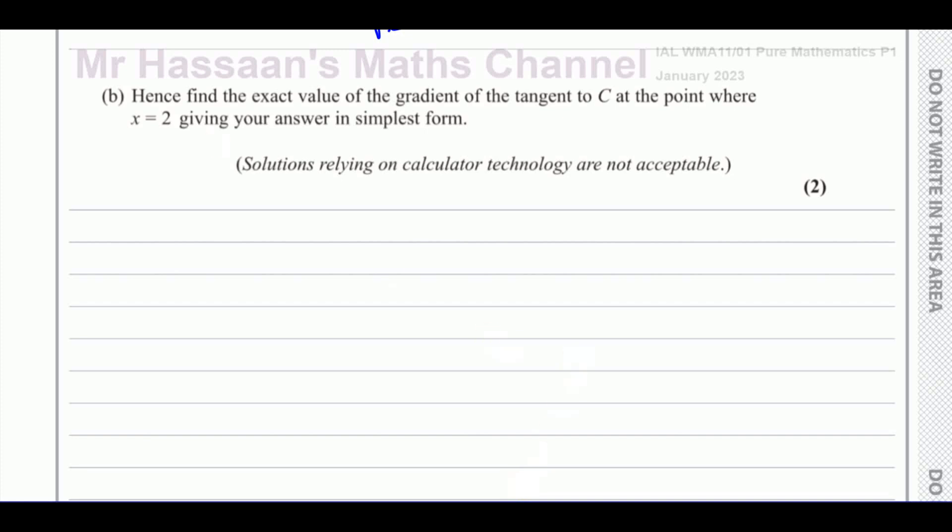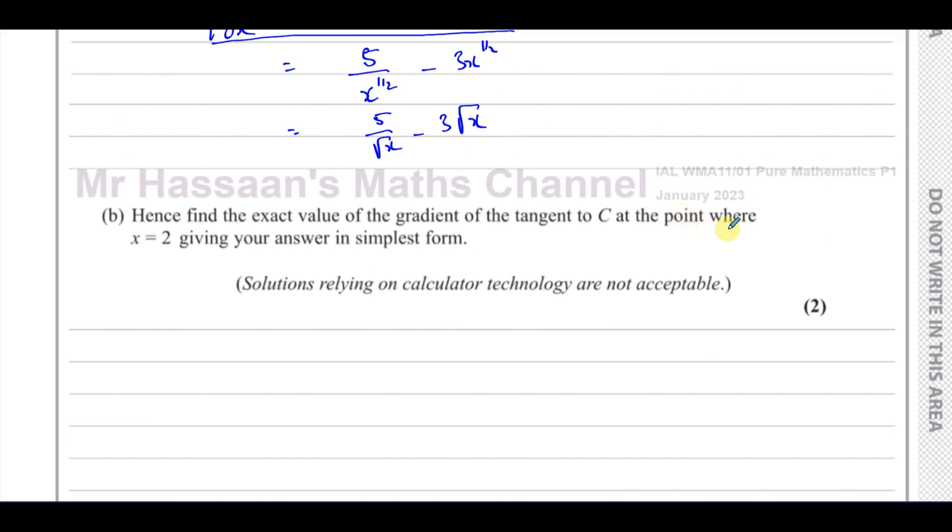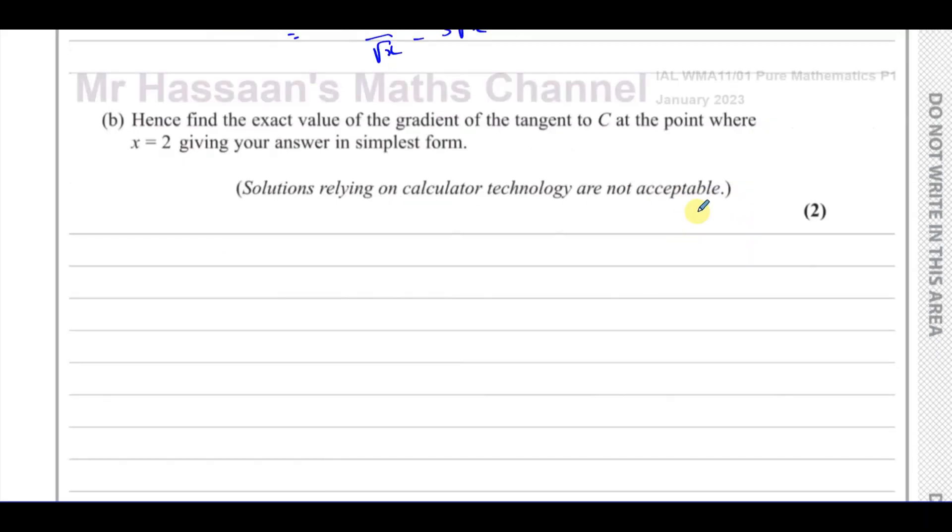Now for part B. It says, hence, find the exact value of the gradient of the tangent to C at the point where x equals 2. Giving your answer in its simplest form, solutions relying on calculator technology are not acceptable. Because you have to show your steps here. So we have to find the value of the gradient of the tangent where x equals 2.